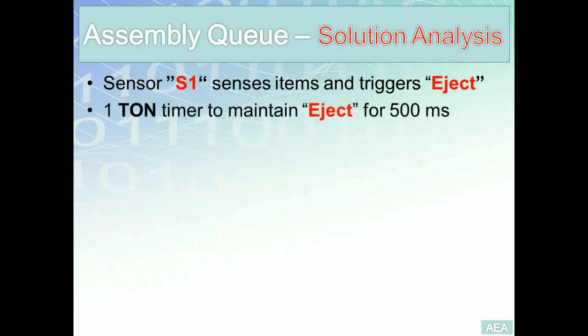The second requirement is we need a timer on-delay to maintain the eject for half a second — five seconds for illustration purposes. Looking at these two requirements: sensor S1 triggers eject, and eject is maintained using the timer. We can either have S1 trigger the eject and the timer simultaneously using the done bit to stop both, or have S1 trigger the timer and use the timer's timing bit to control the eject. Both ways work fine — it's your personal choice.